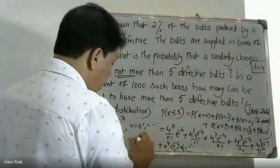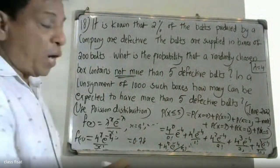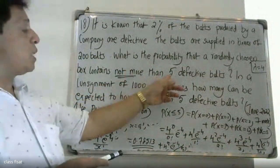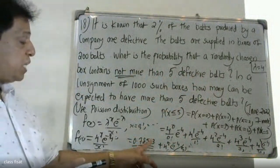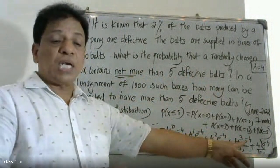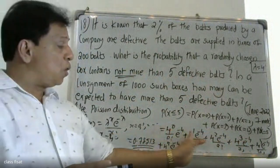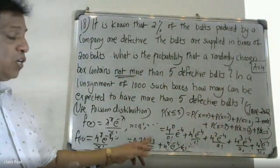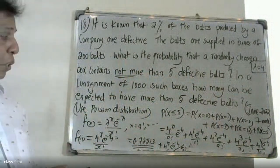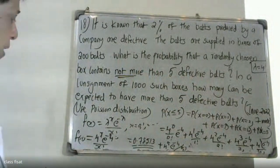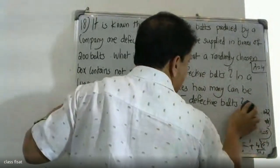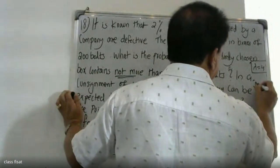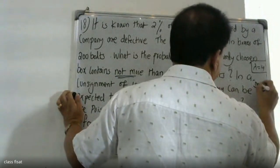The answer to the first question, P(X ≤ 5), is 0.78513.